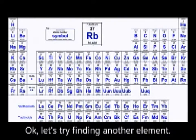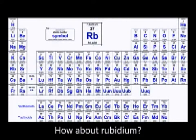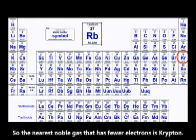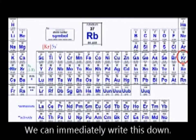Okay, let's try finding another element. How about rubidium? So the nearest noble gas that has fewer electrons is krypton. So we can immediately write this down.